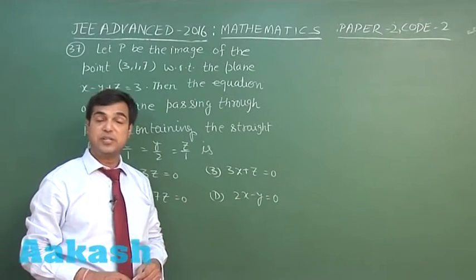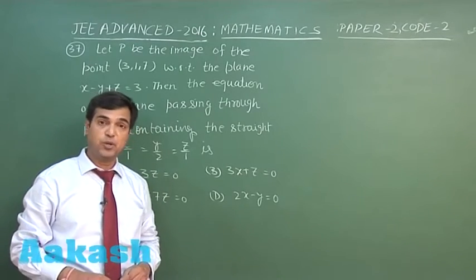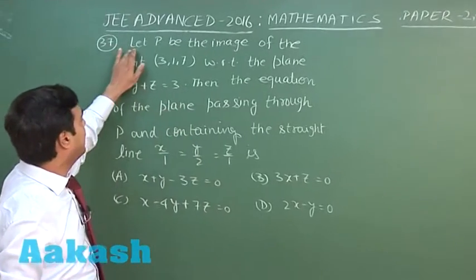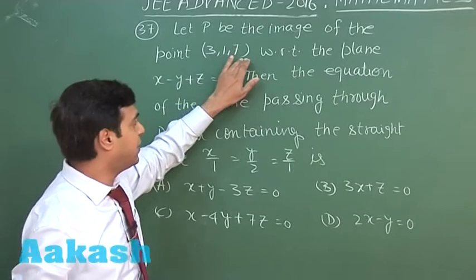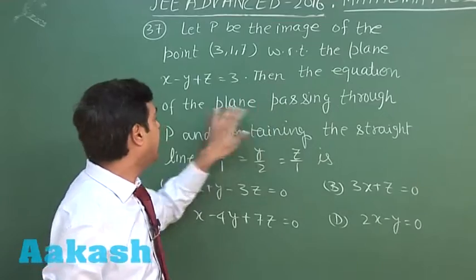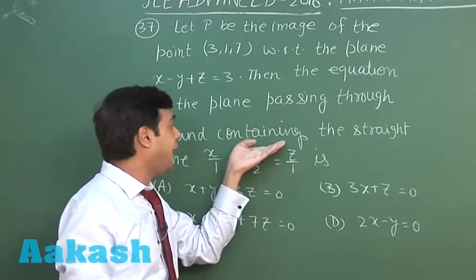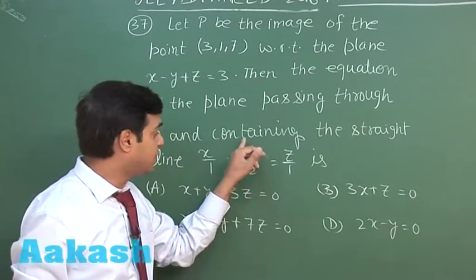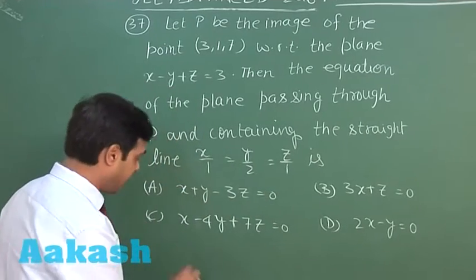Hello students. Now it's time to talk about JEE Advanced 2016 Paper 2, Question 37. Let P be the image of the point (3, 1, 7) with respect to the plane x minus y plus z equals 3. Then find the equation of the plane passing through point P and containing the straight line x/1 = y/2 = z/1. Let's start this one.